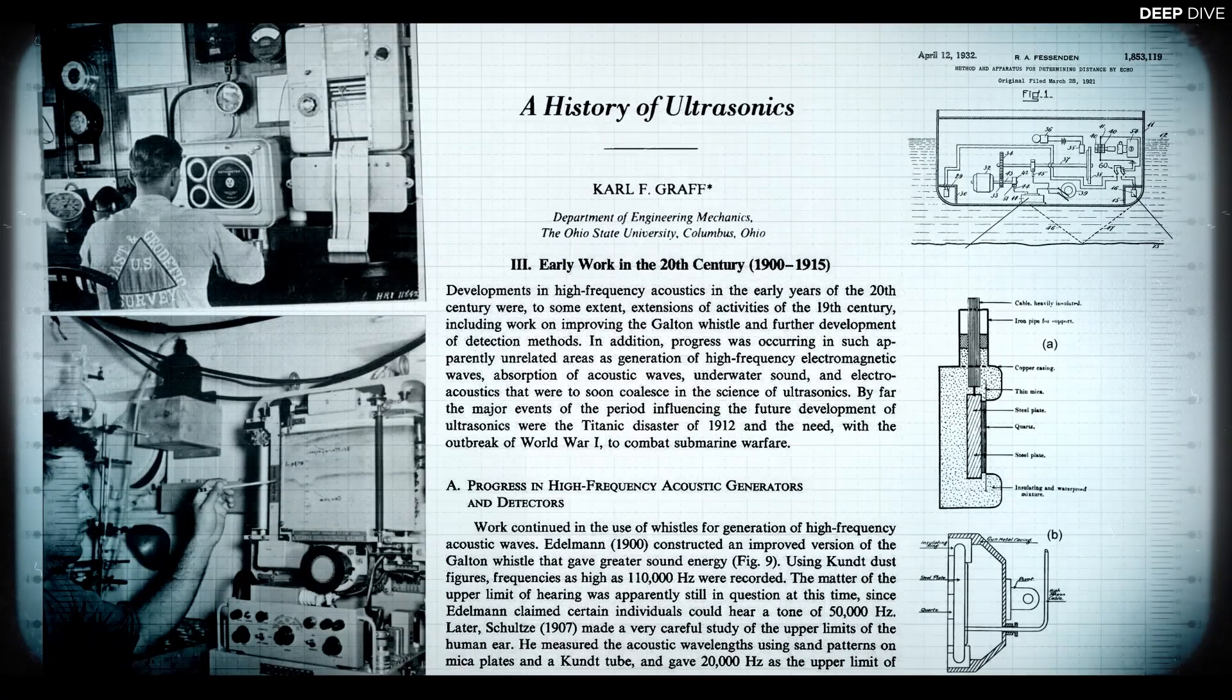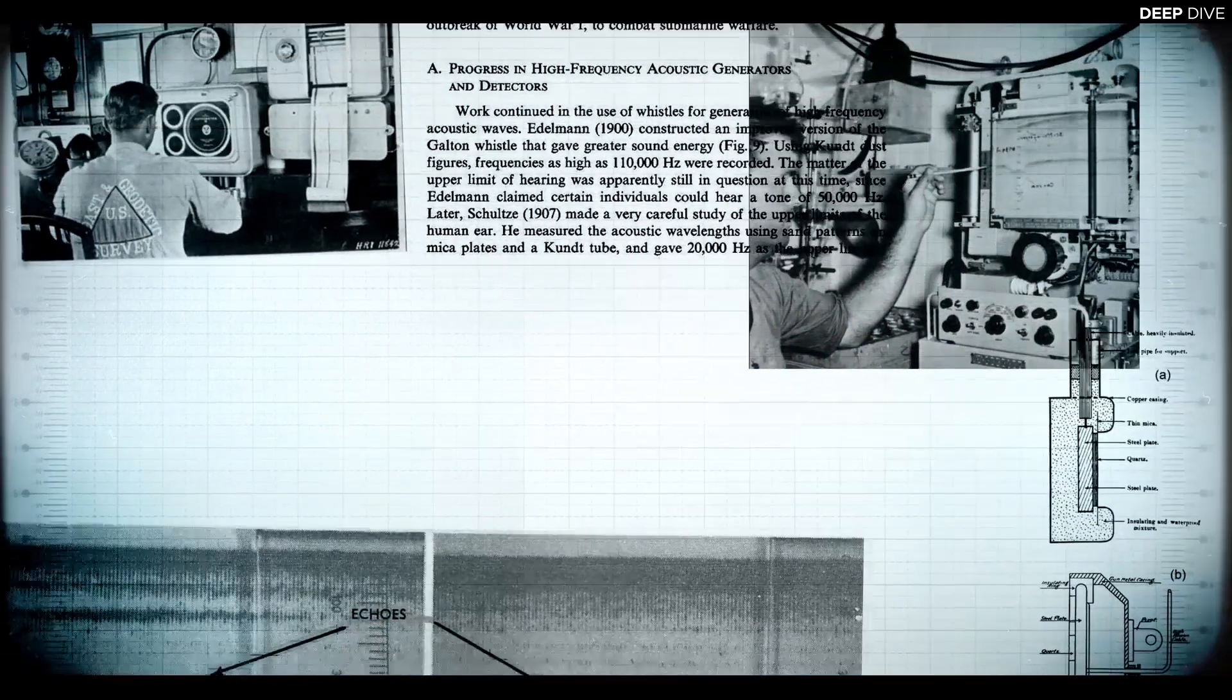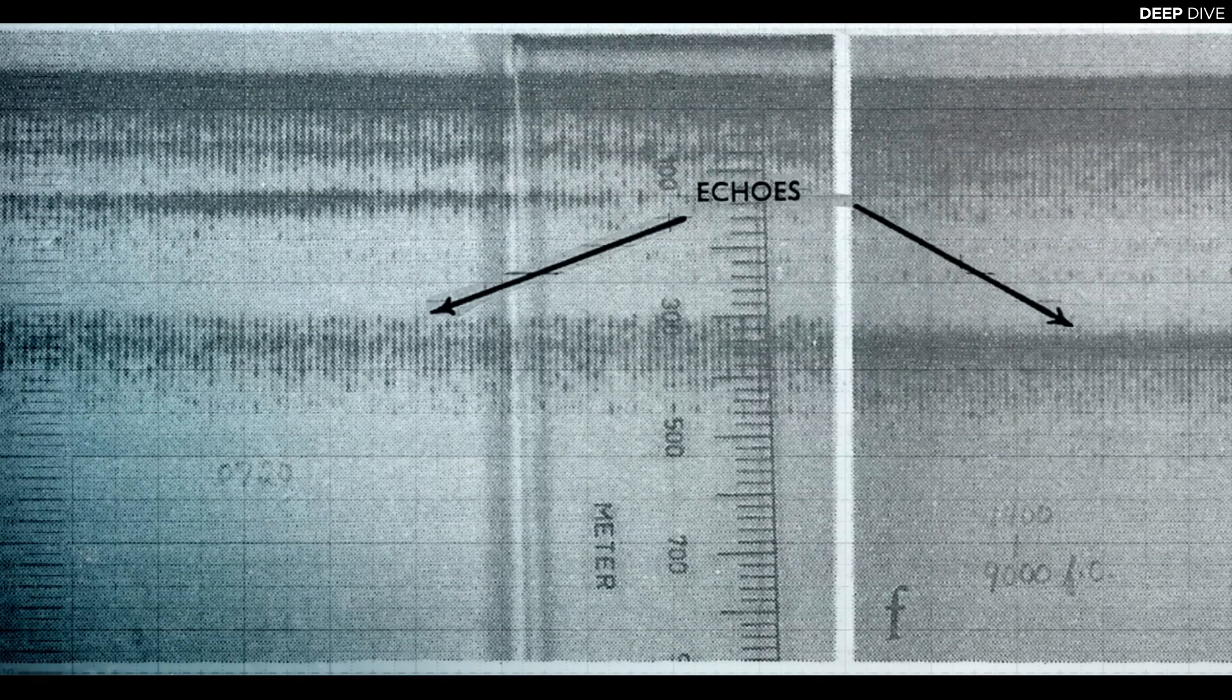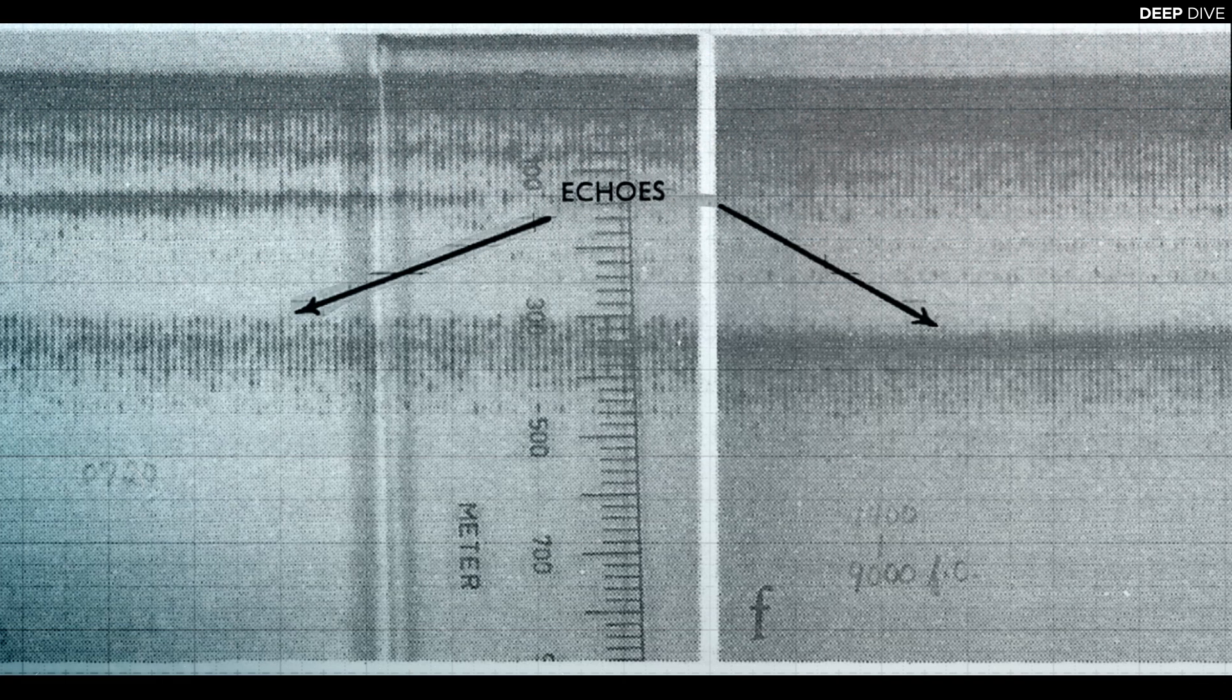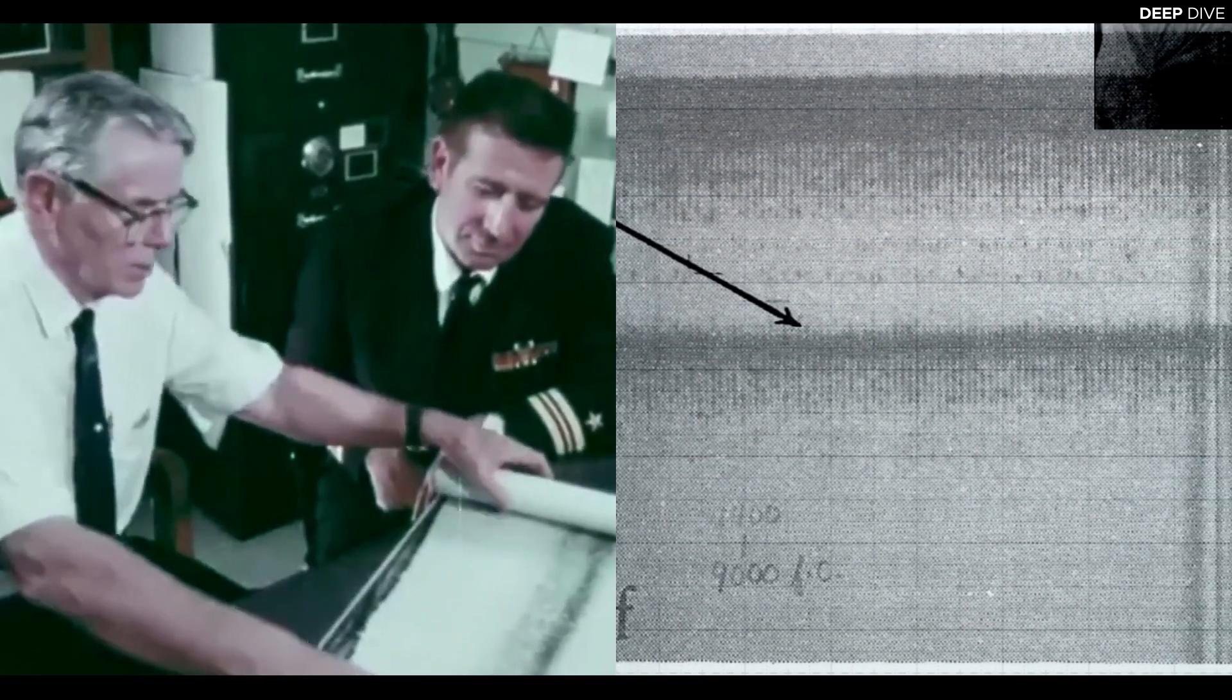Since the inception of echo sounding at the start of the 20th century, we picked up strange echoes from the depths of the ocean. Something deep below the surface appeared to reflect the sound produced by the sonars. These echoes were often so strong and so widespread that they were thought to show sandbanks or the ocean floor, even though later experiments revealed that this couldn't possibly be the case.